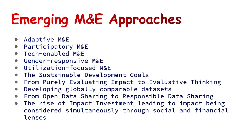The first approach is adaptive M&E. This is an approach that embraces uncertainty, complexity, and feedback loops in the design and implementation of M&E systems. It allows for flexibility, learning, and adaptation in response to changing conditions, assumptions, and evidence — using the adaptive approach of M&E.